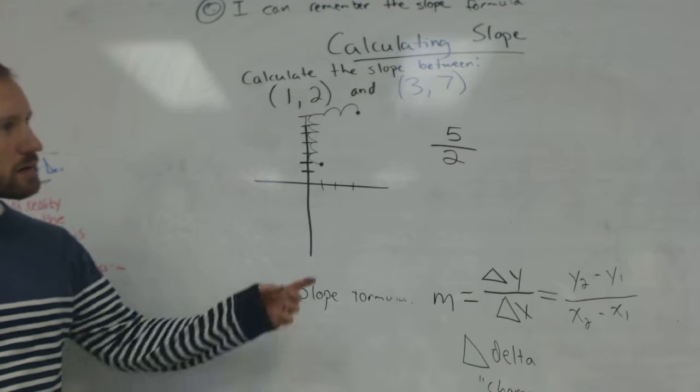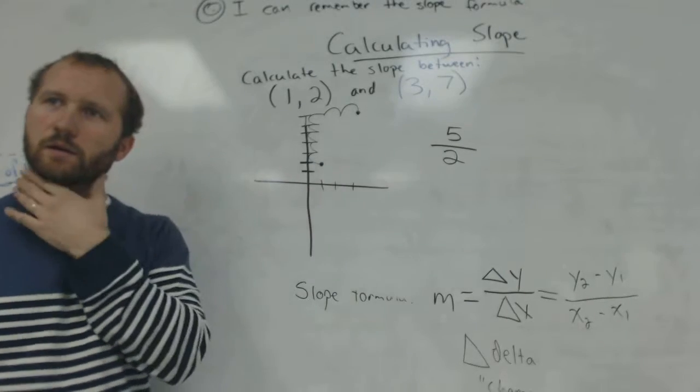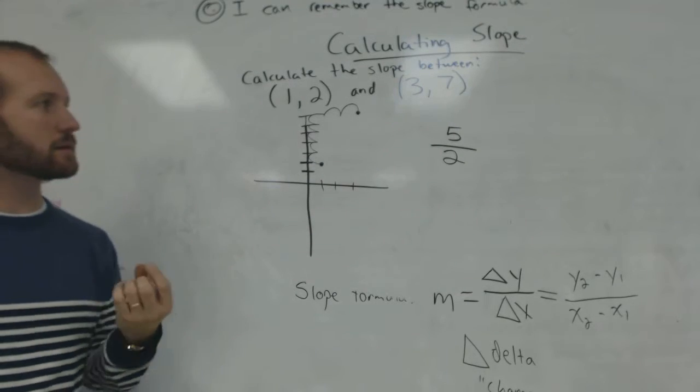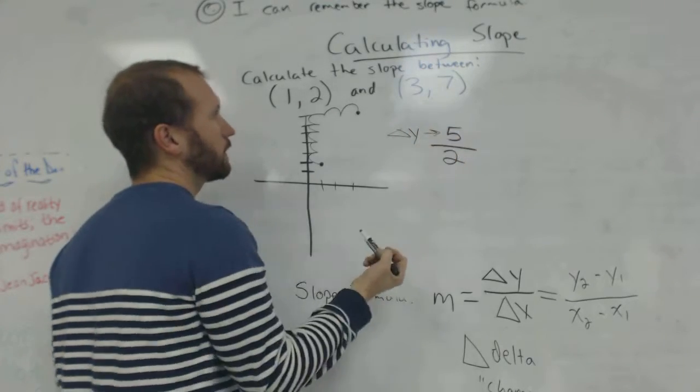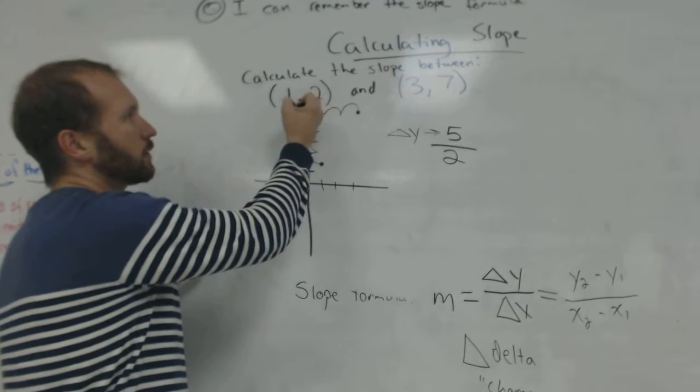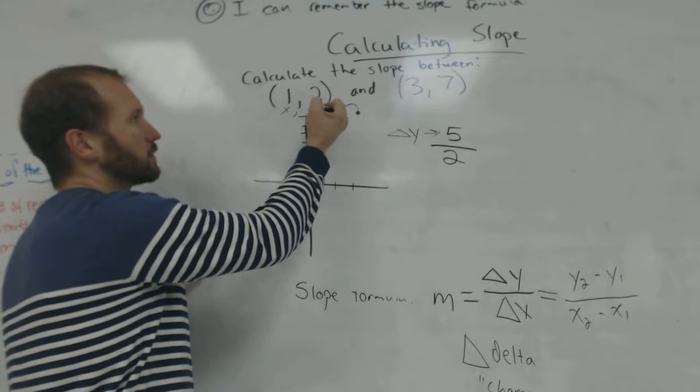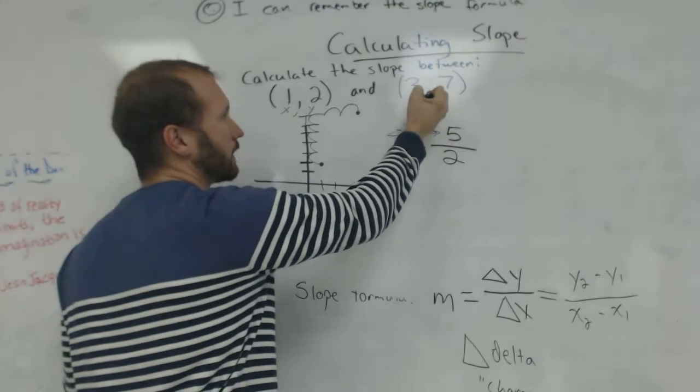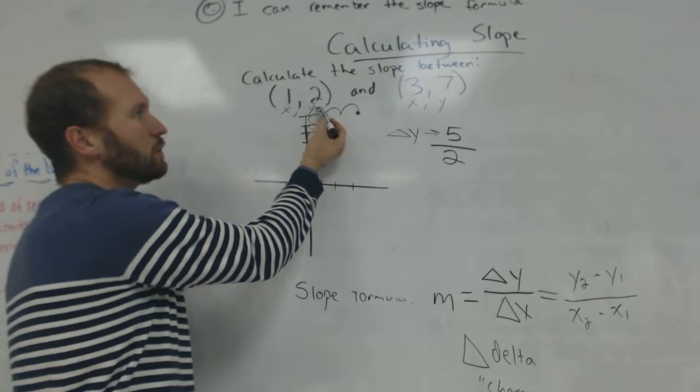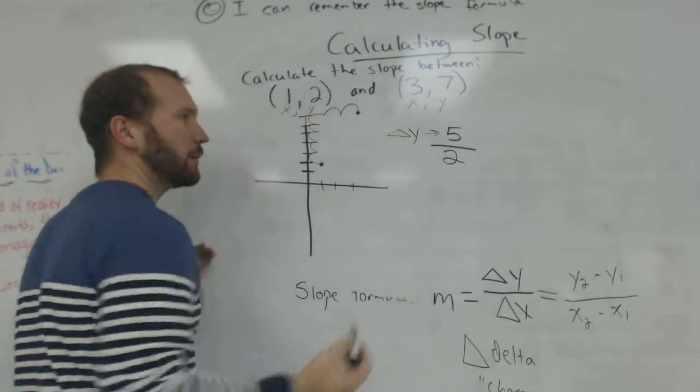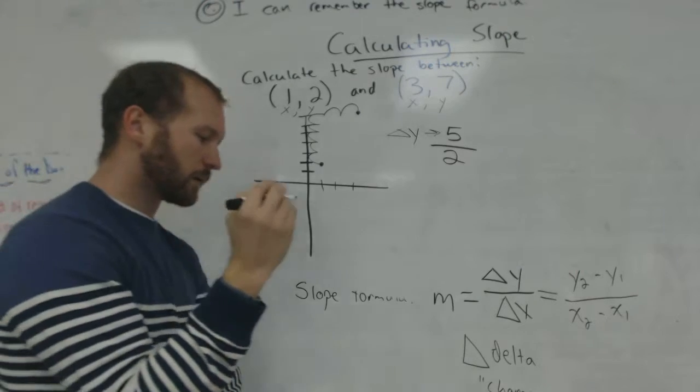And I did that by plotting the points. But there's actually a way that we can do it without plotting the points. Does anyone notice any patterns about these numbers and these numbers? Look just at the y's. So remember, this is the change in y up here at the top. And in the coordinate points, the first point is x, and the second one is y. Look just at the y's. 2 and 7, and somehow we get 5.